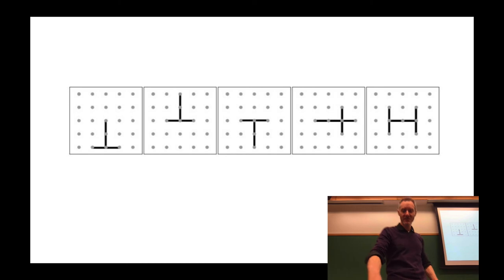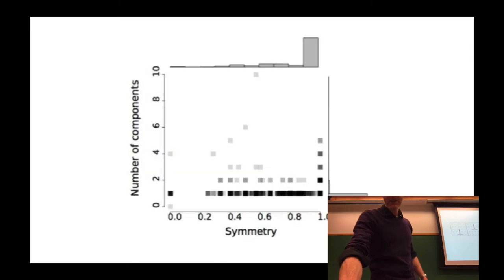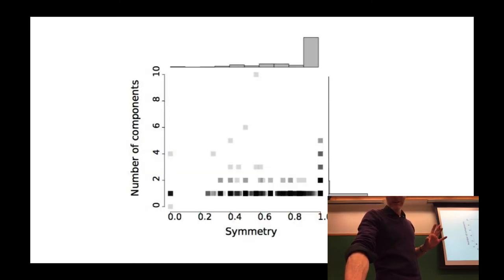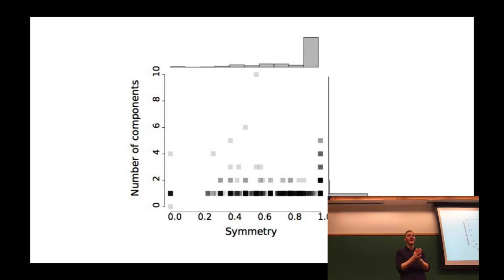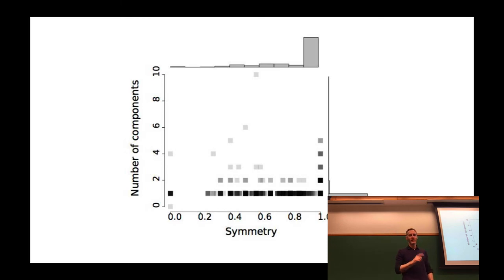The next stage in the experiment goes from crowdsourcing to crowd seeding — we take ideas from the crowd, extract those ideas, and seed a purely machine team. Symmetry is good, and that insight can be built into the machine search.